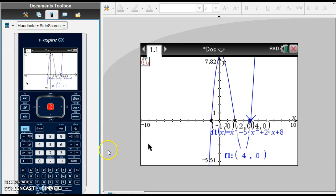So this graph has three zeros: x equals negative 1, x equals 2, and x equals 4.